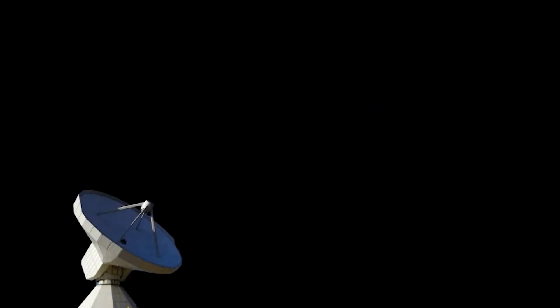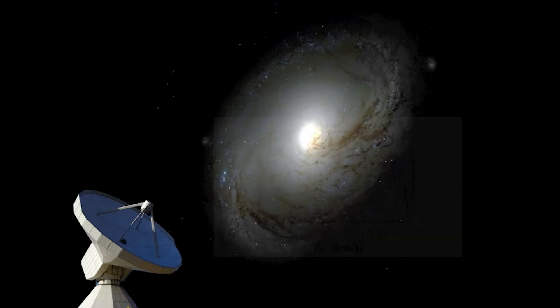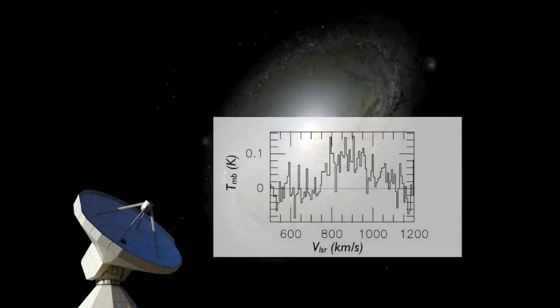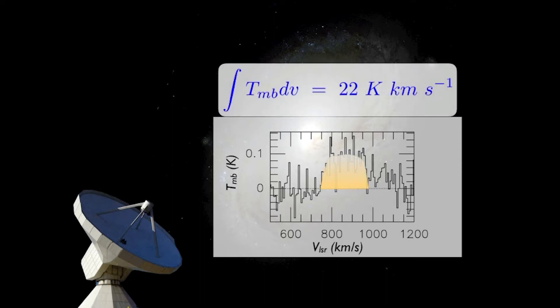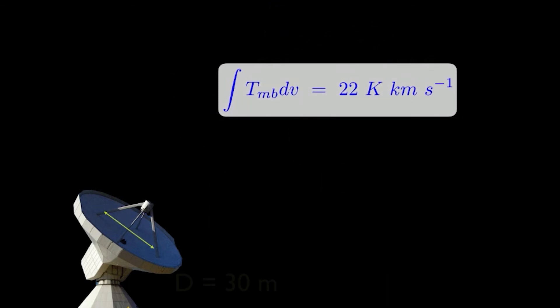Let's try an example. Suppose we had an IRAM 30 meter telescope observation of a nearby galaxy, and detected a 220 kilometer wide CO 2 to 1 line with an integrated intensity of 22 kelvin kilometer per second. Now IRAM has an antenna diameter of 30 meters, and, checking the IRAM website, an aperture efficiency of about 0.45 at 230 gigahertz.